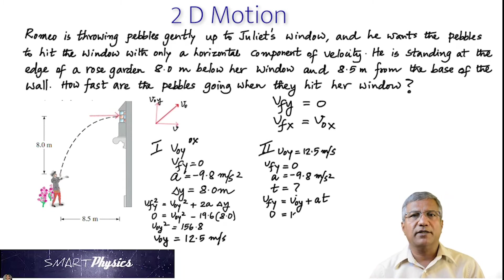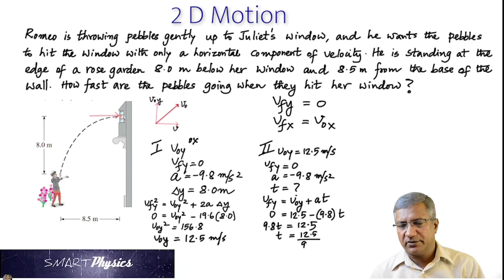VFY is 0. V0Y is 12.5. And the A is negative 9.8. So that brings the negative and then multiplied by time. So when you rearrange, you get 9.8T is 12.5, which means the time is 12.5 divided by 9.8. And so we get the time it takes as 1.28 seconds.